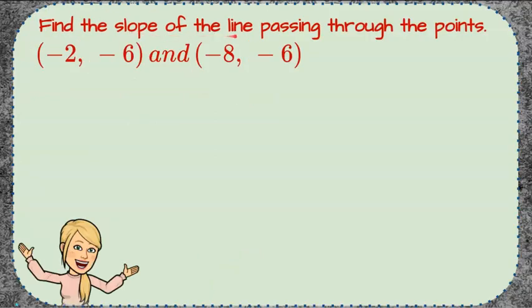I'm going to ask you to find the slope of the line passing through the points negative 2 negative 6 and negative 8 negative 6. Here's your slope formula.